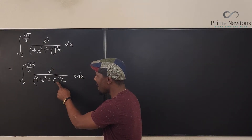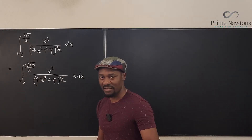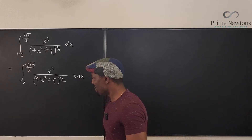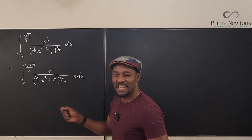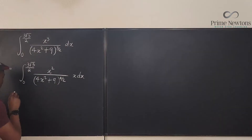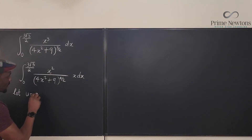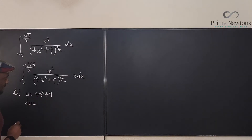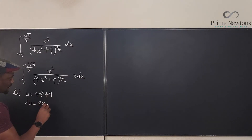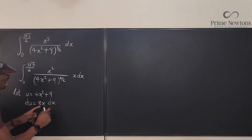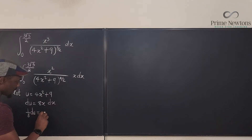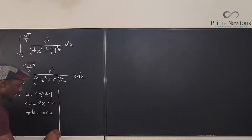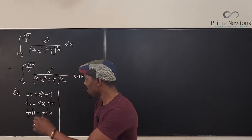Now, if there were another x here I couldn't make this my u because things would get really messy. But thank God there is no extra x, so I'm going to make 4x²+9 my u and take the derivative. Let u = 4x²+9, so du = 8x dx. From here I can isolate x dx by dividing both sides by 8, giving me: (1/8) du = x dx.